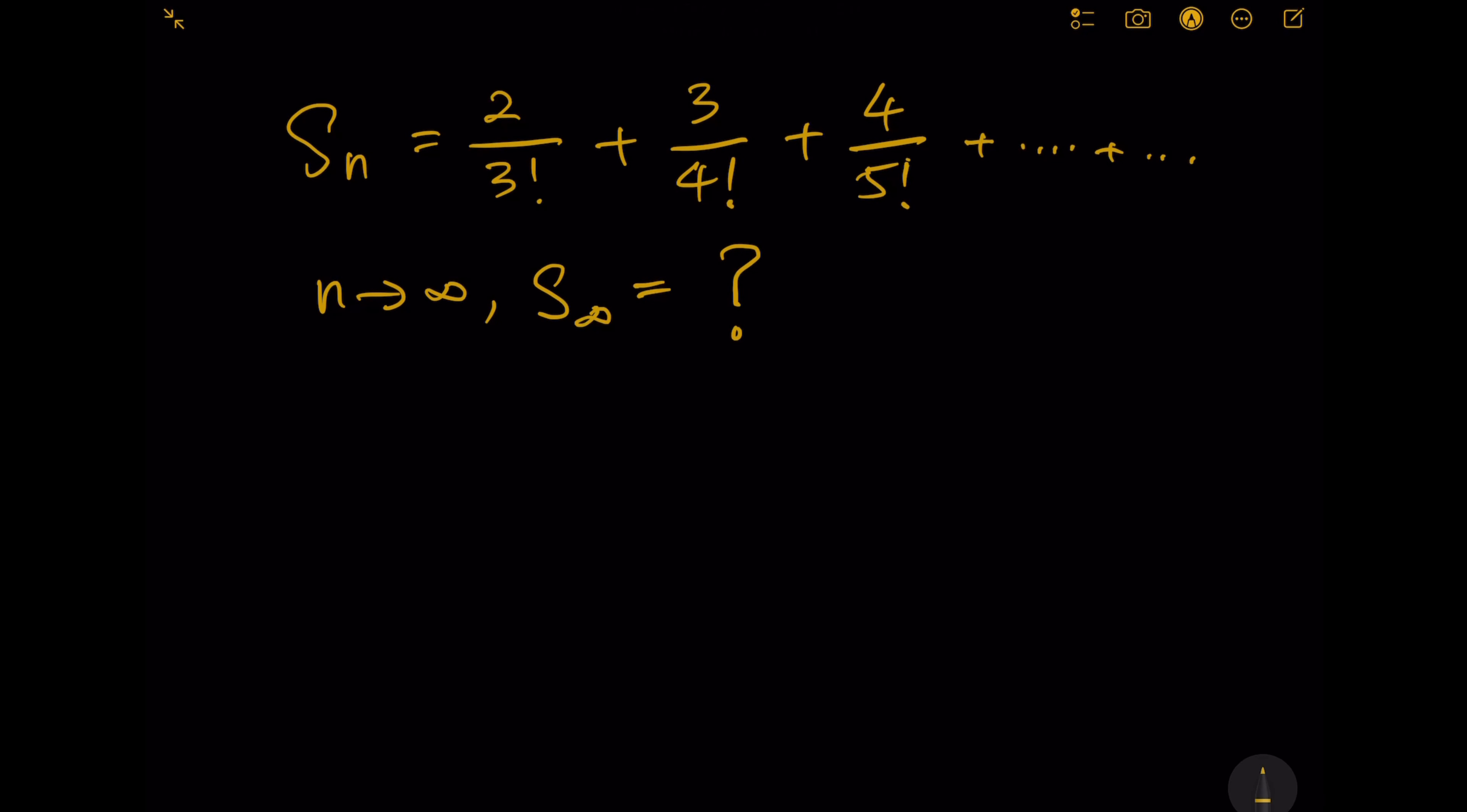Hello everybody. Given a series of numbers: 2 divided by 3 factorial plus 3 divided by 4 factorial plus 4 divided by 5 factorial, and so on.